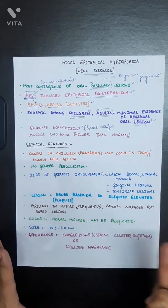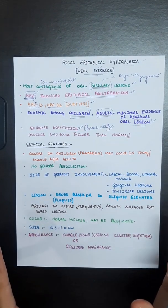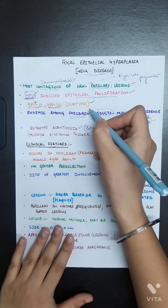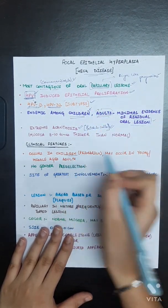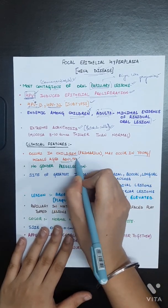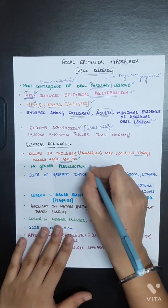Now the clinical features of focal epithelial hyperplasia. It occurs more commonly in children primarily, as we have read earlier, and may occur in young or middle-aged adults. There is no gender predilection.